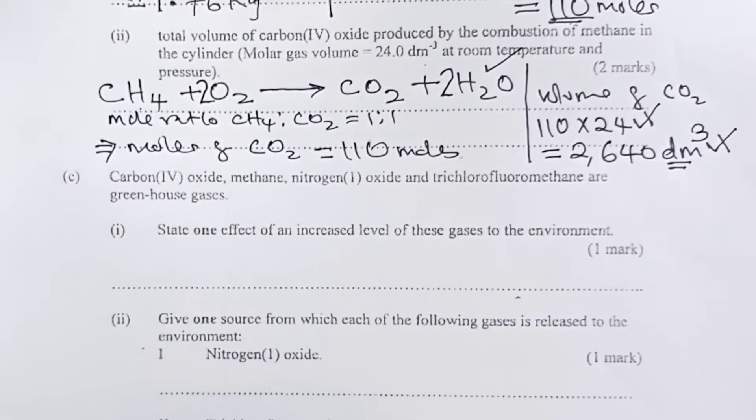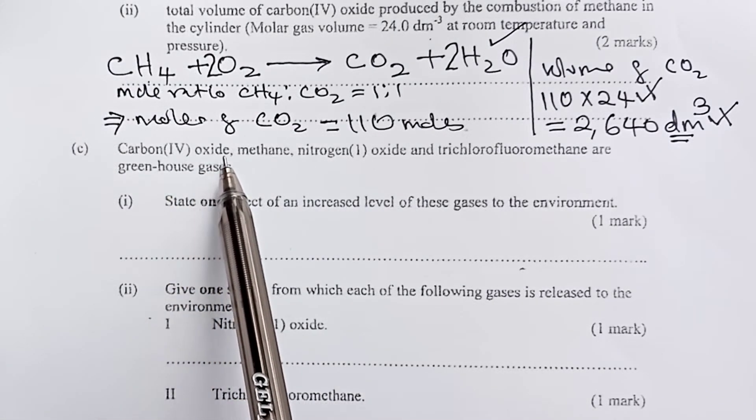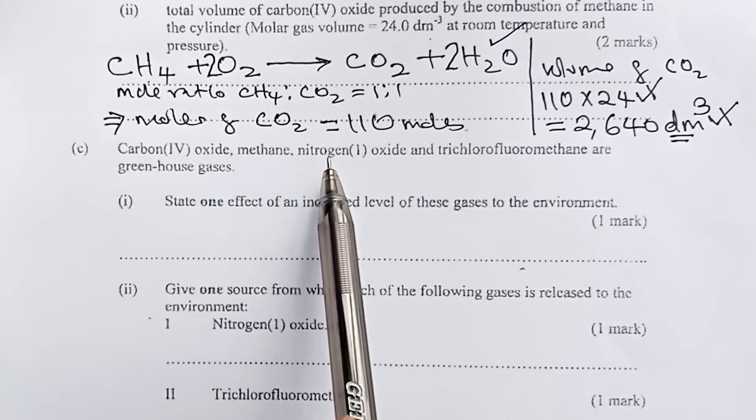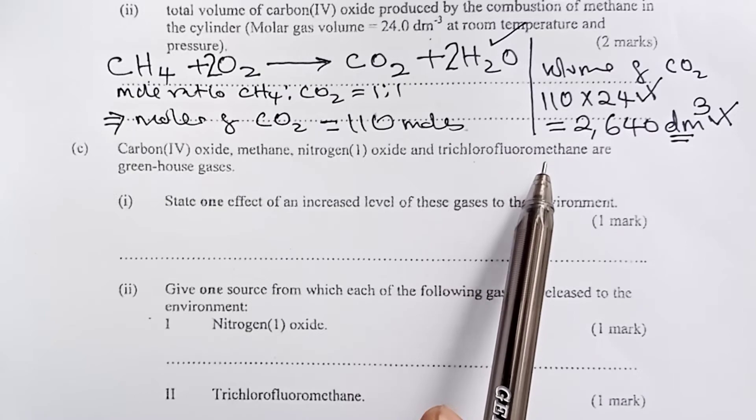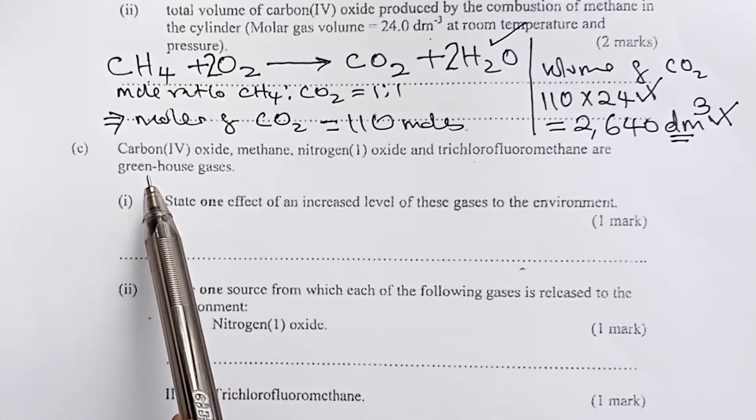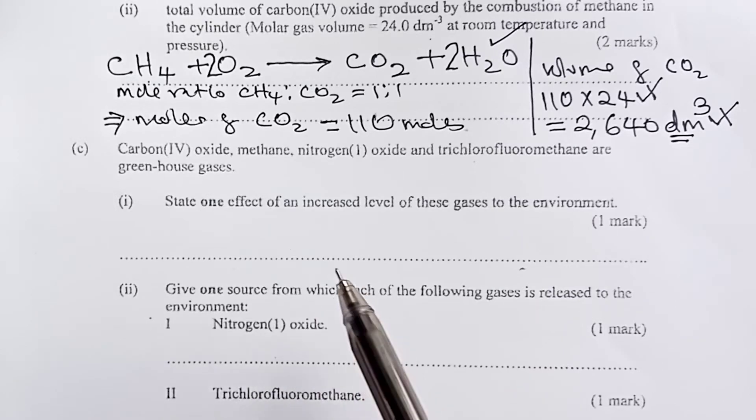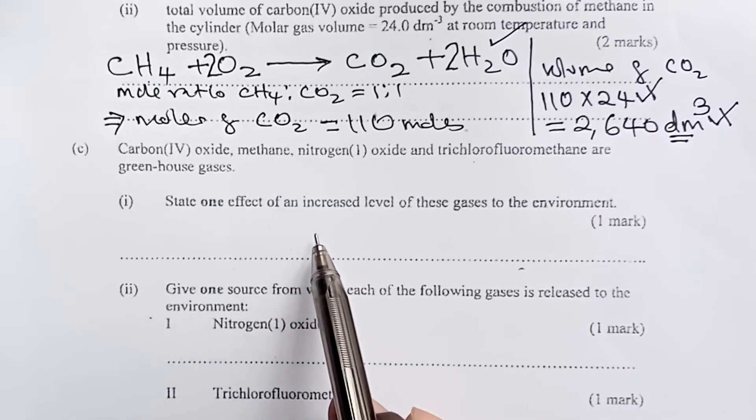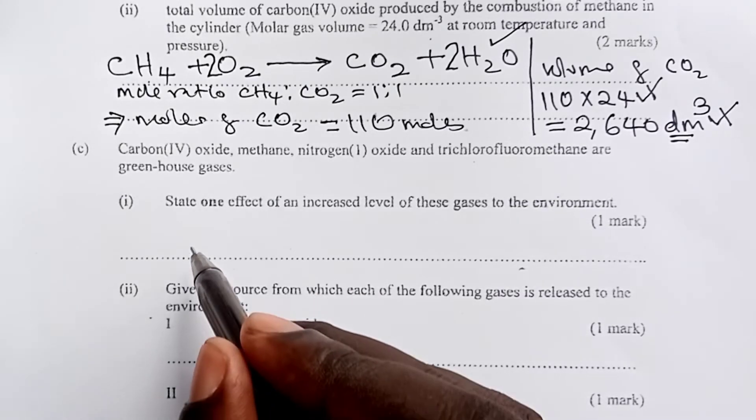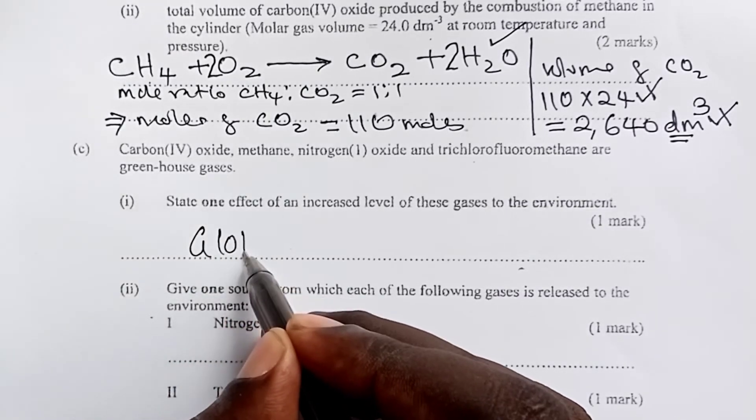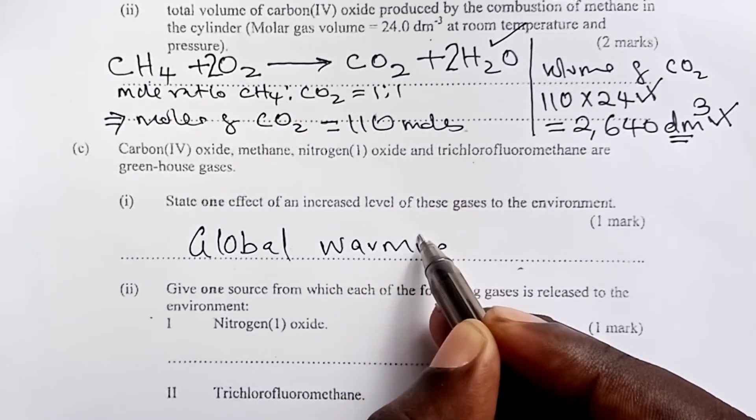Part C: Carbon-4 oxide, methane, nitrogen-1 oxide, and trichlorofluoromethane are greenhouse gases. State one effect of an increased level of these gases in the environment. That effect is called global warming. For one mark.